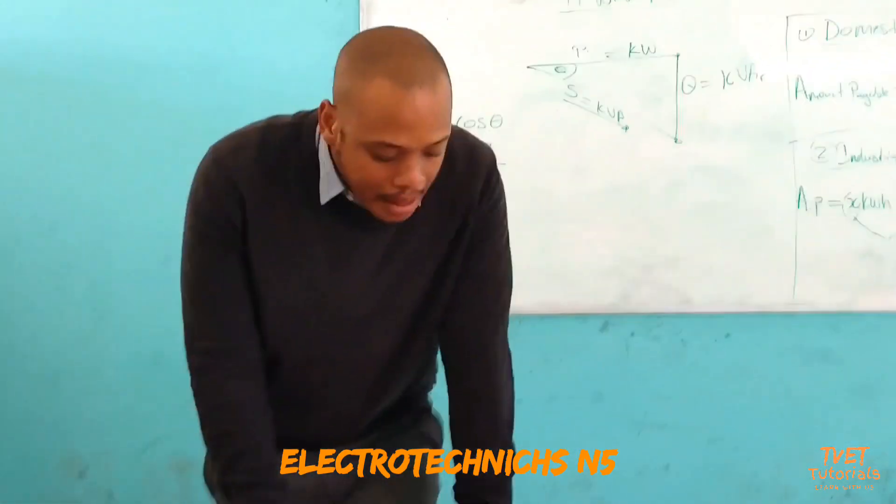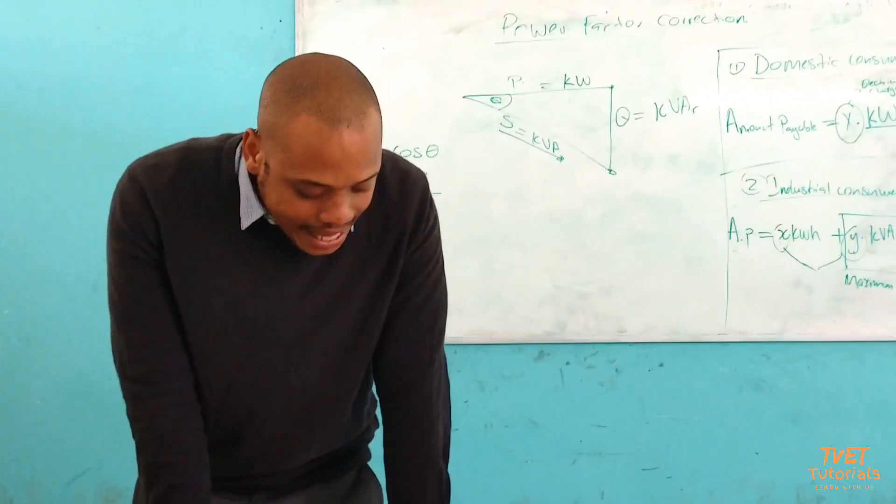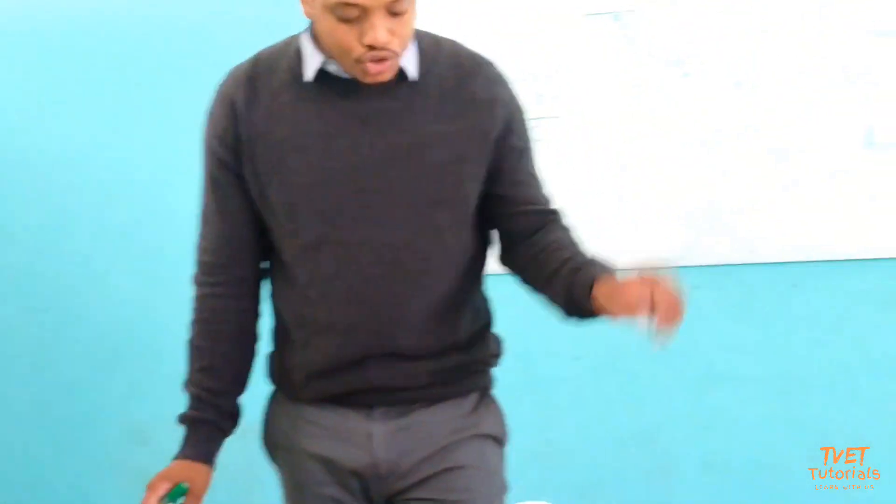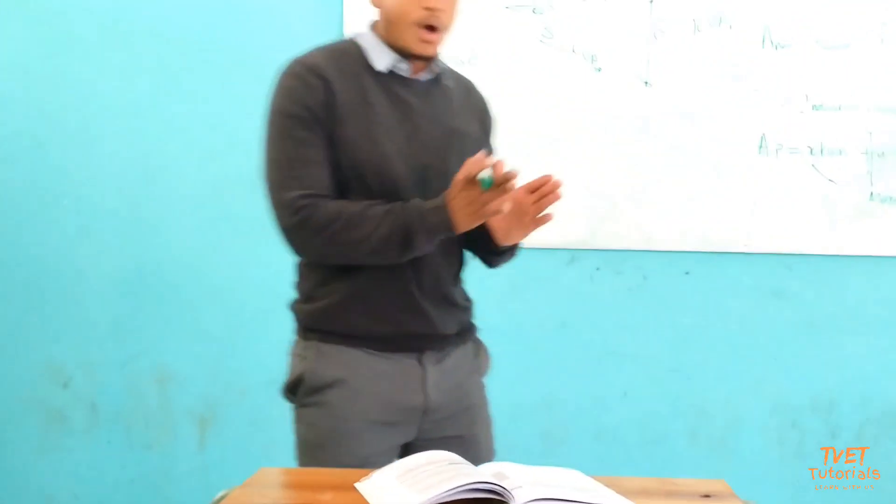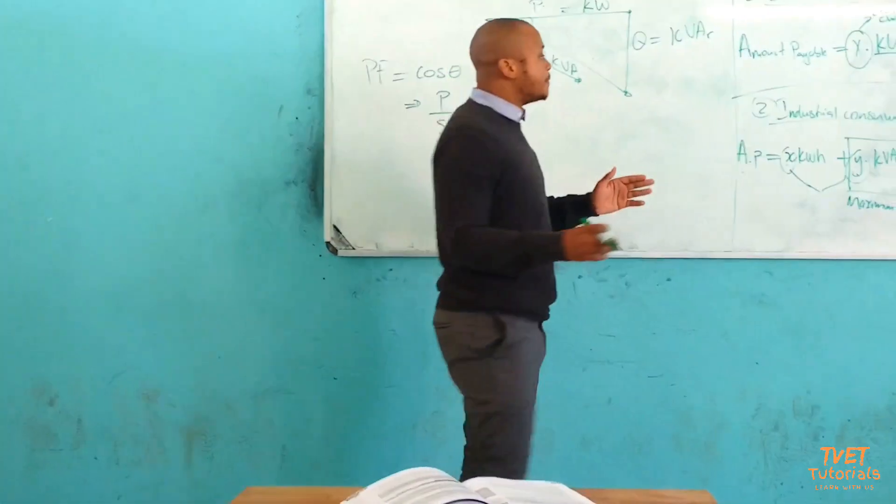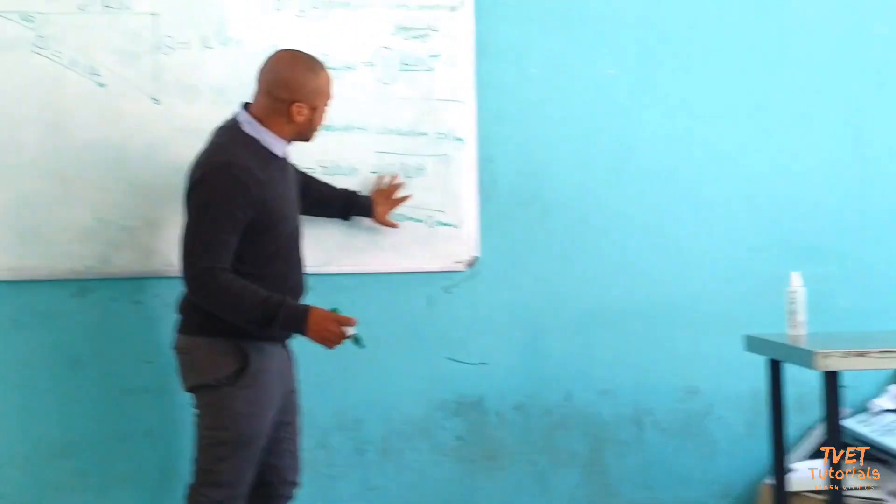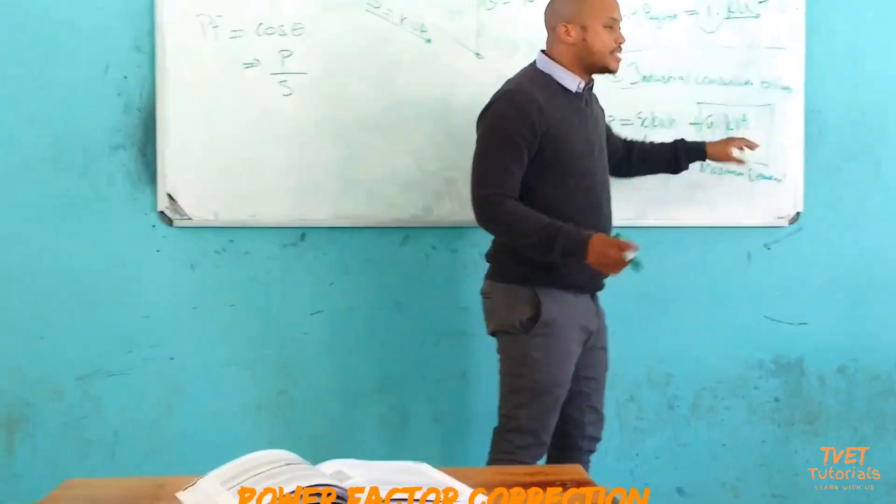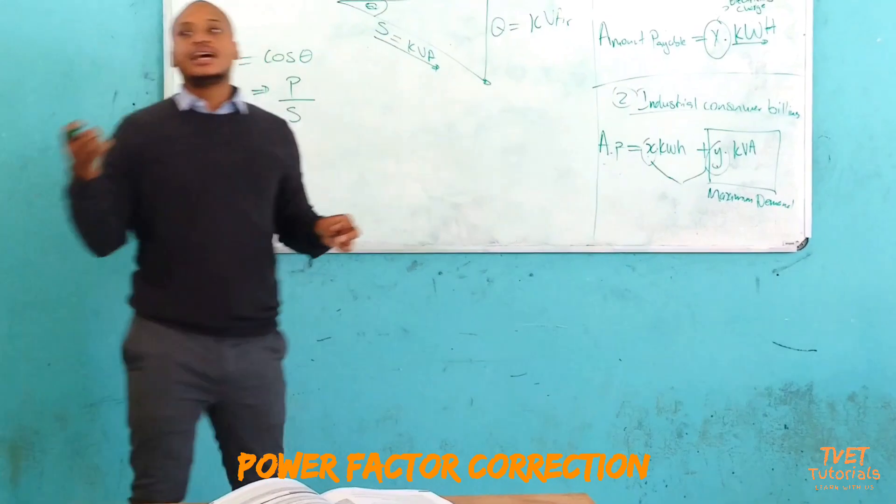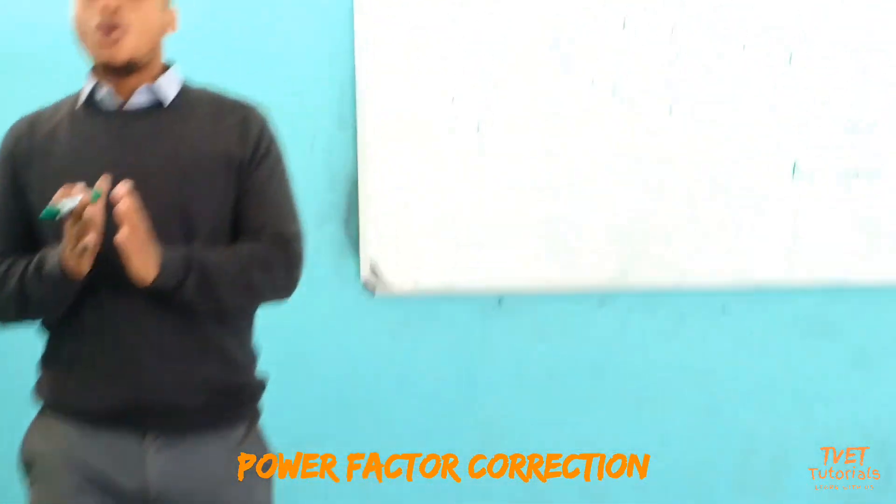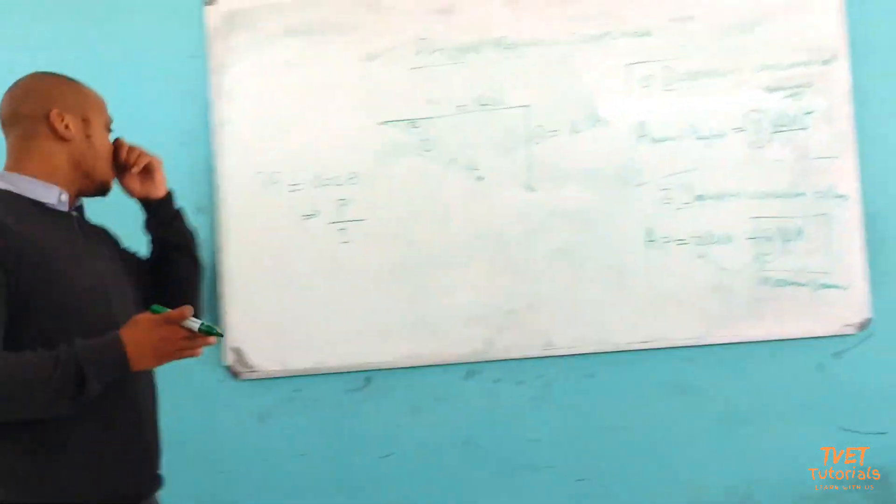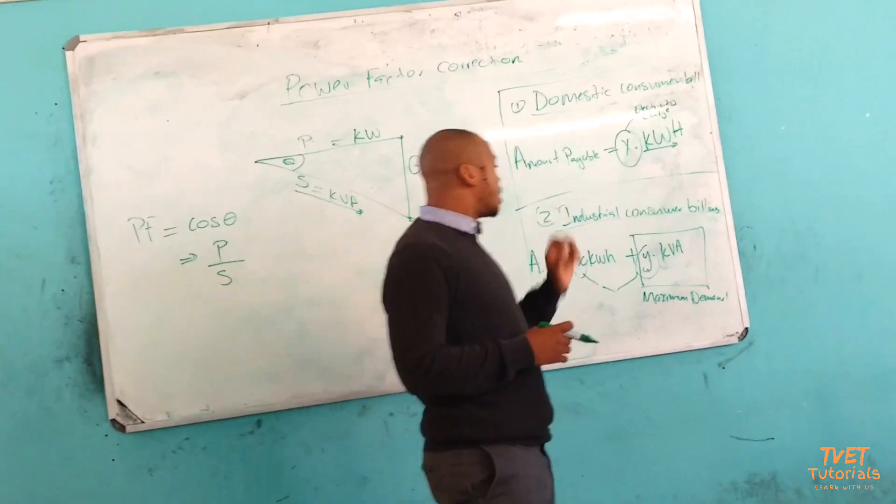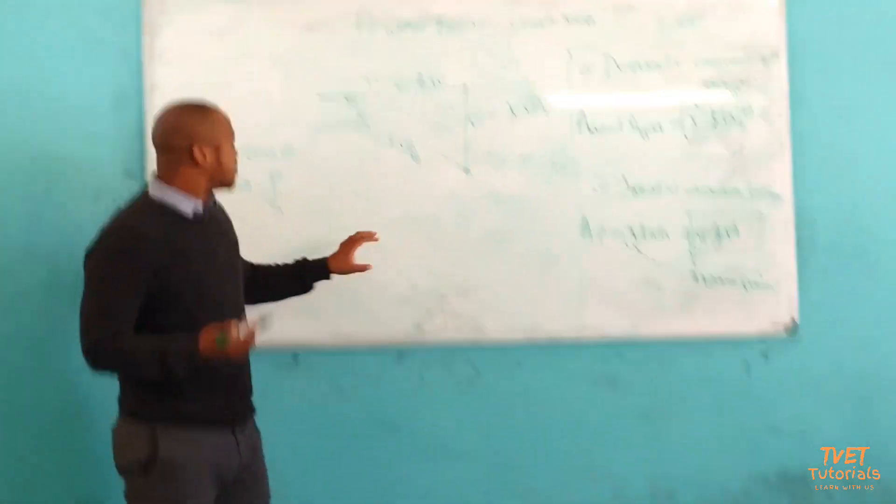By definition, maximum demand is the highest average power in kilowatt or in KVA drawn by the industrial consumer over a specific time. So this KVA is the amount of kilowatt drawn by your industrial load for a specific amount of time.